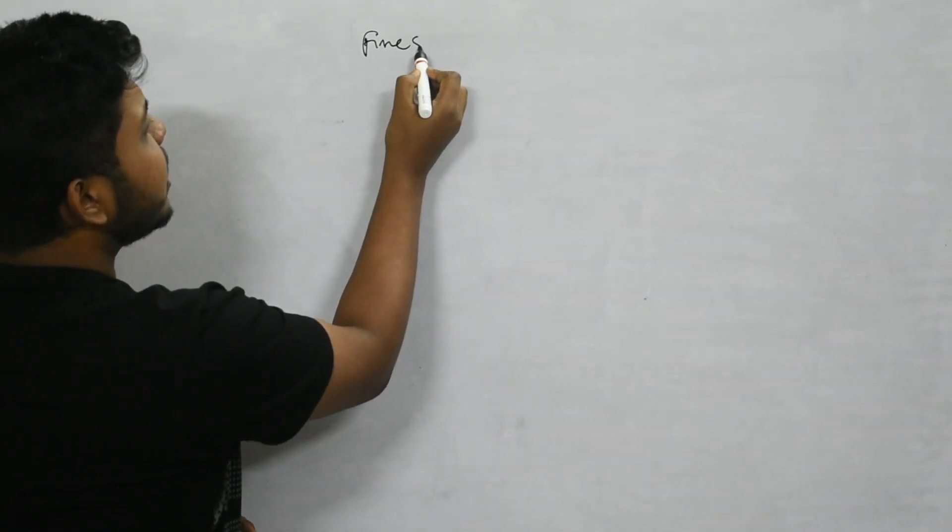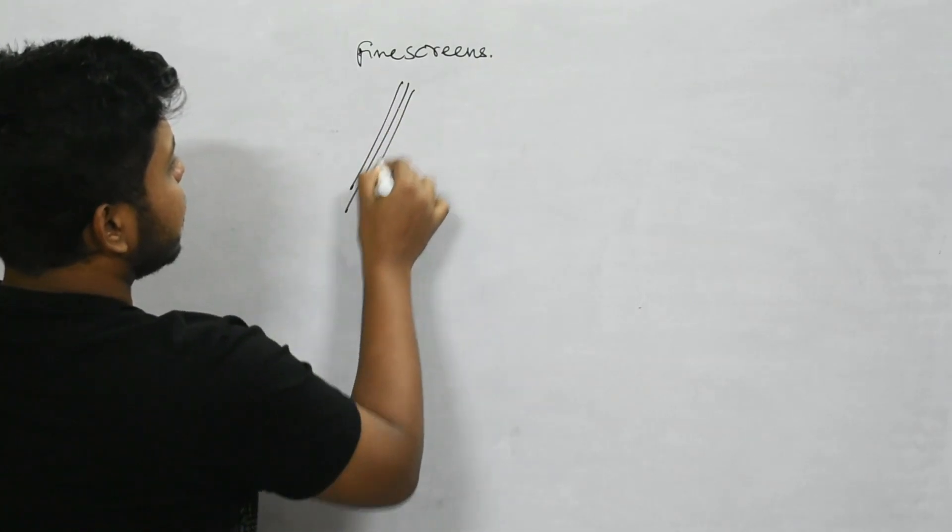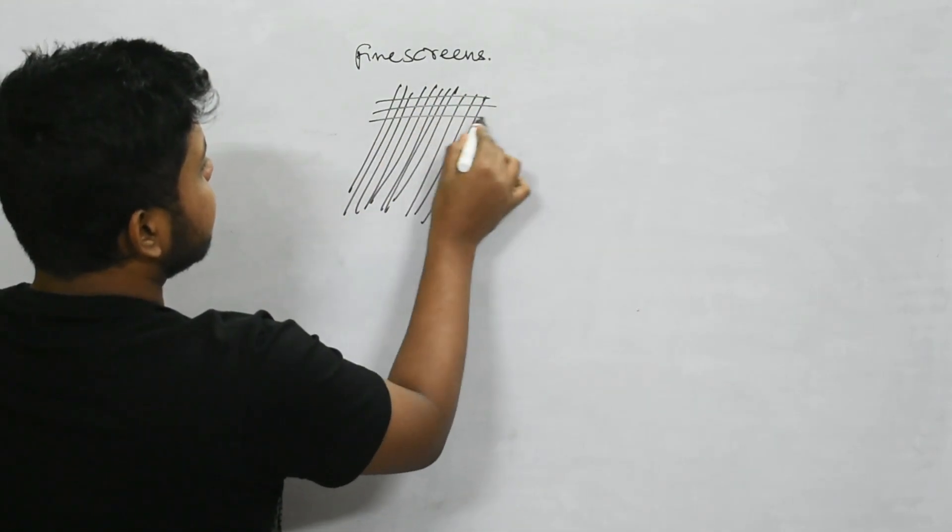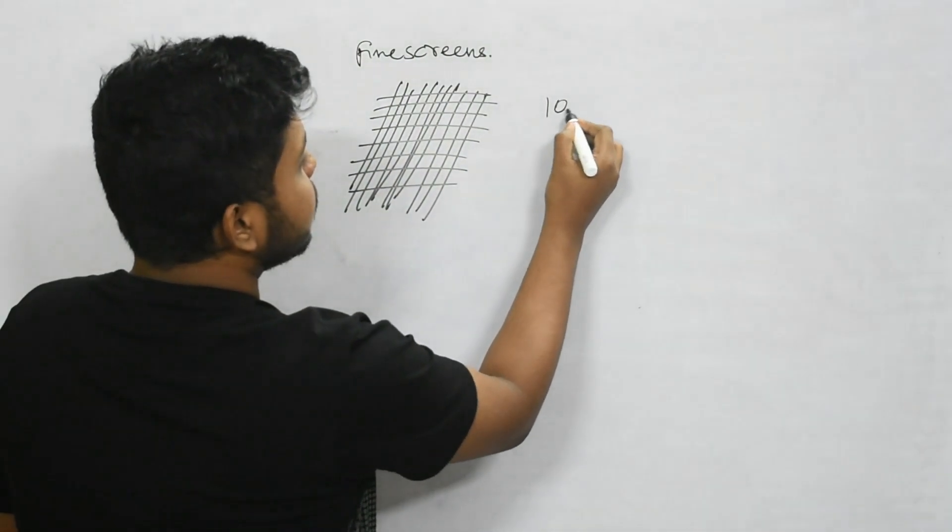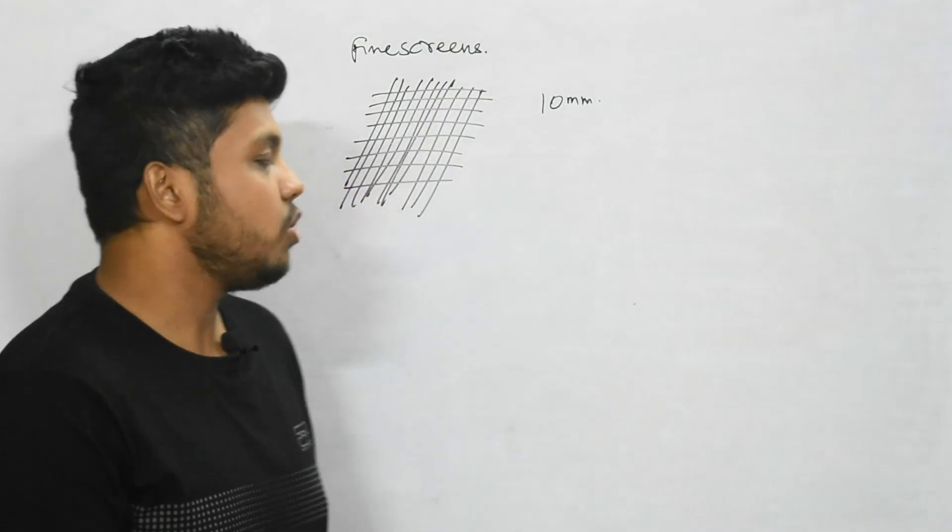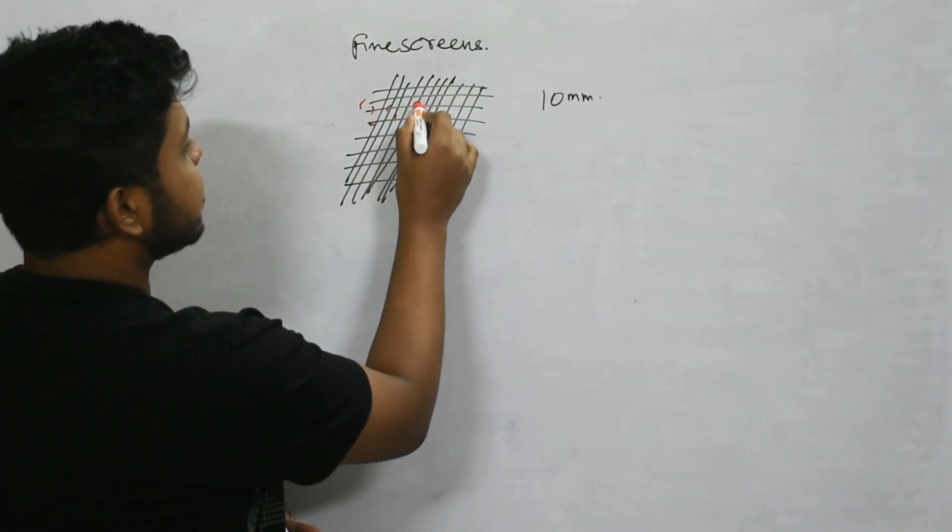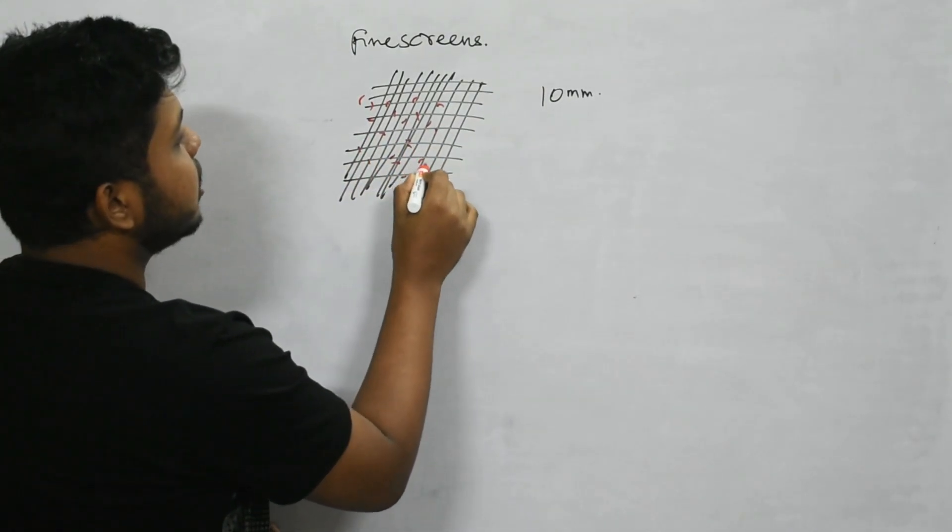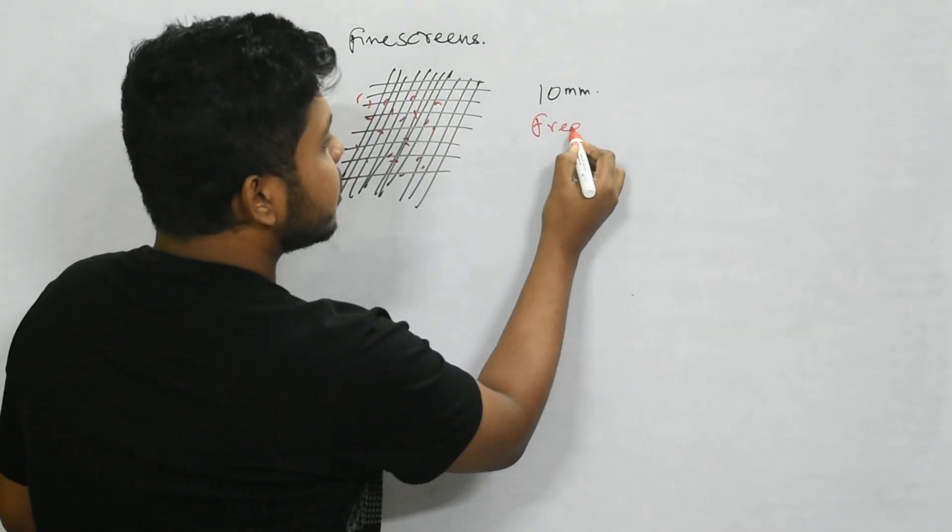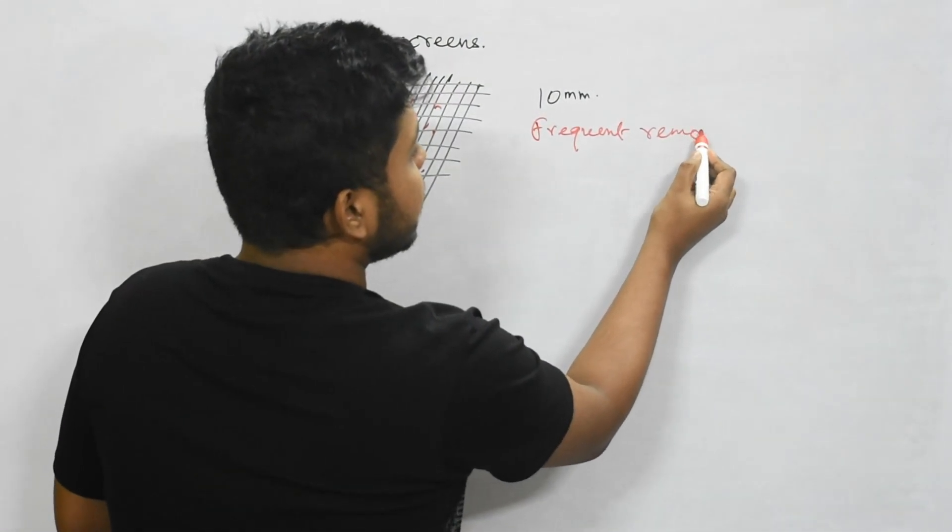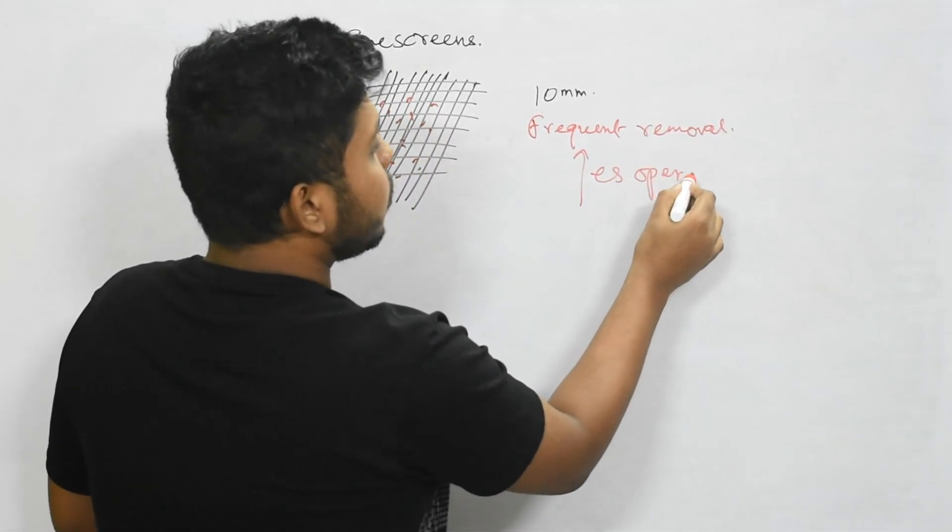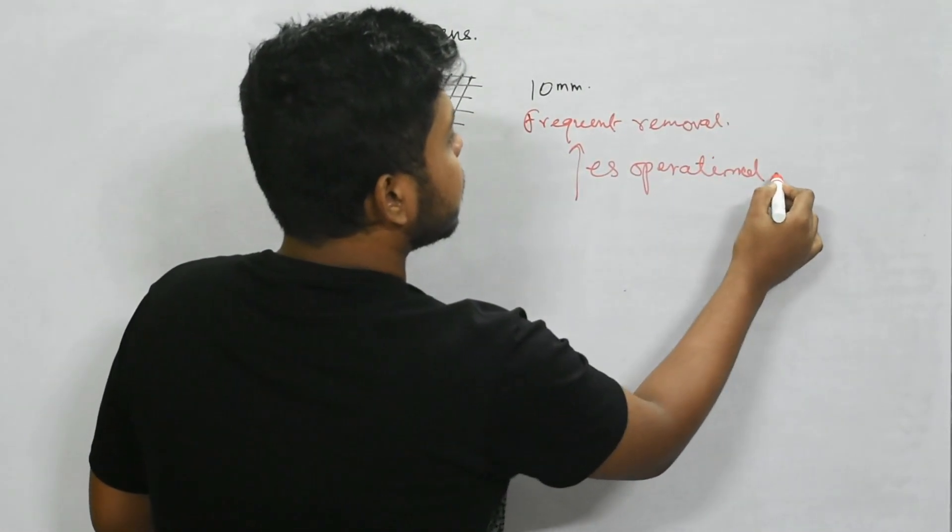Fine screens are wire mesh screens with very small openings of 10 mm or less. But these fine screens are avoided because the larger suspended particles get clogged very frequently which needs frequent removal. This frequent removal process increases the operational cost.